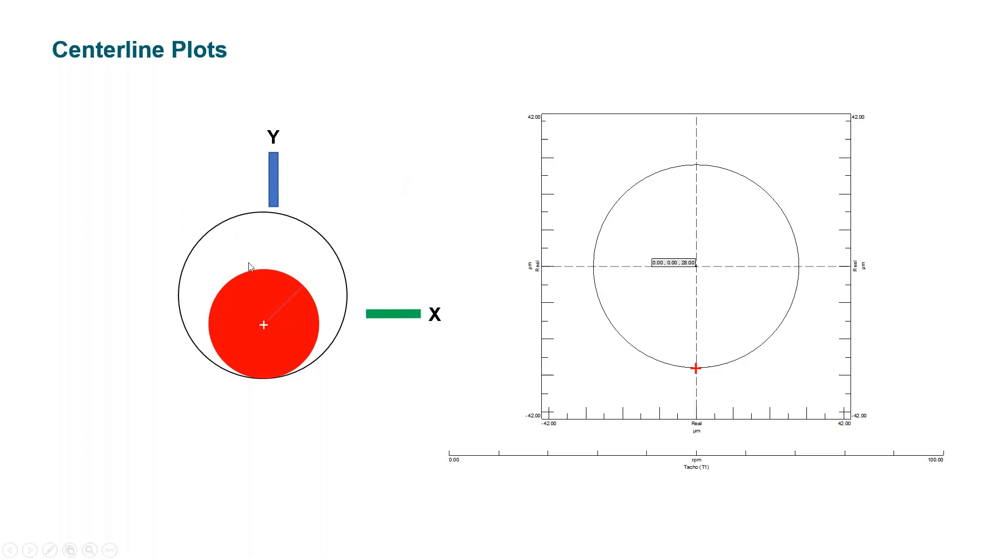And basically, it turns very slowly, still touching the bearing, and I can see the corresponding red cross in my display on the right. So we are really touching the bearing.